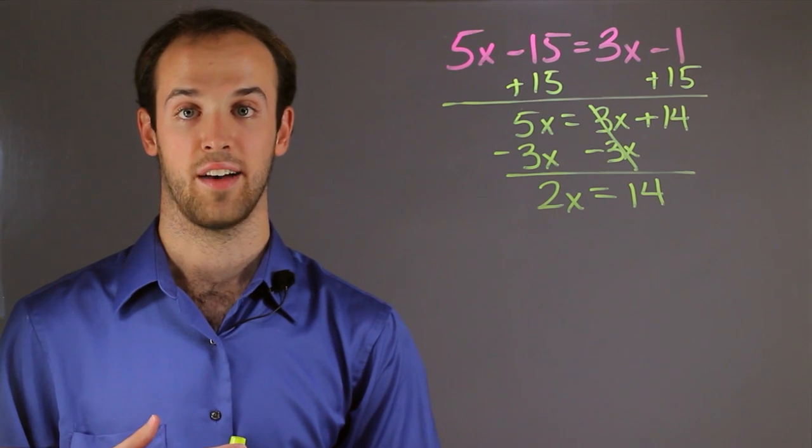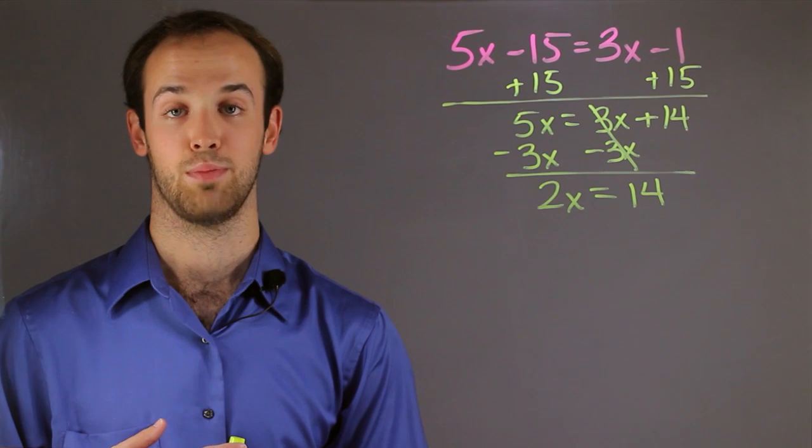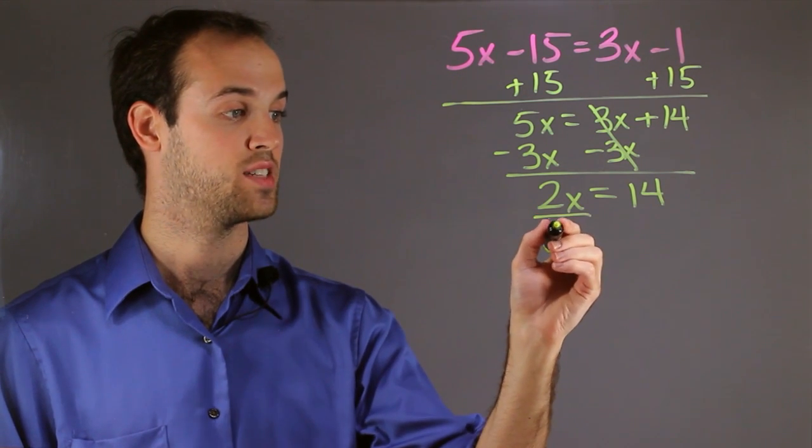And now, the only thing left to do is to get this x by itself. And right now, it's being multiplied by 2. So to get rid of it, I have to divide it by 2.